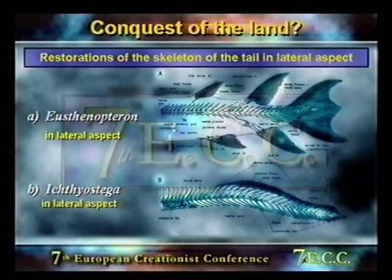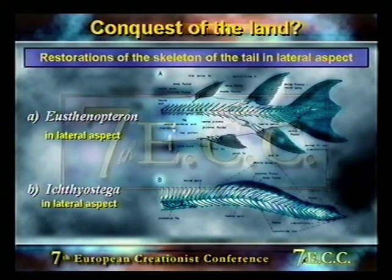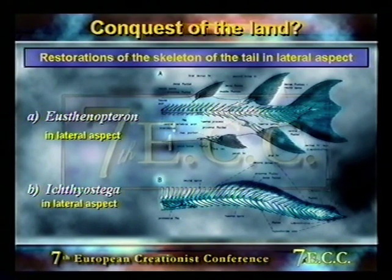Ichthyostega is clearly a tetrapod — it has limbs with digits rather than fins. However, there are some characteristics shared with certain fishes from the Upper Paleozoic, including details of the skull bones, the structure of the teeth, possession of a lateral line for sensing in water, a middle ear adapted for underwater hearing, and a tail fin with fin rays called lepidotrichia — the same fin rays found on Eusthenopteron.